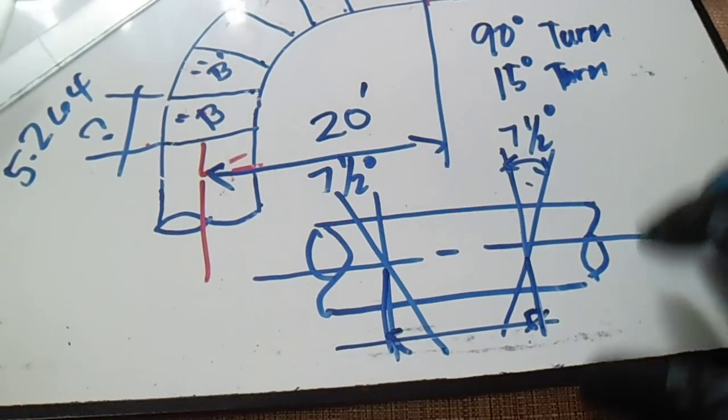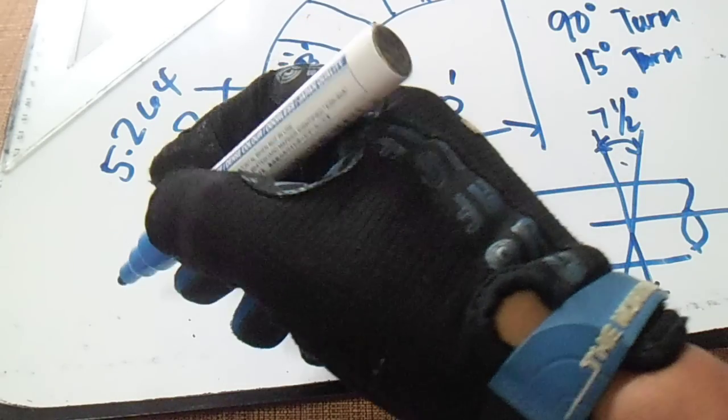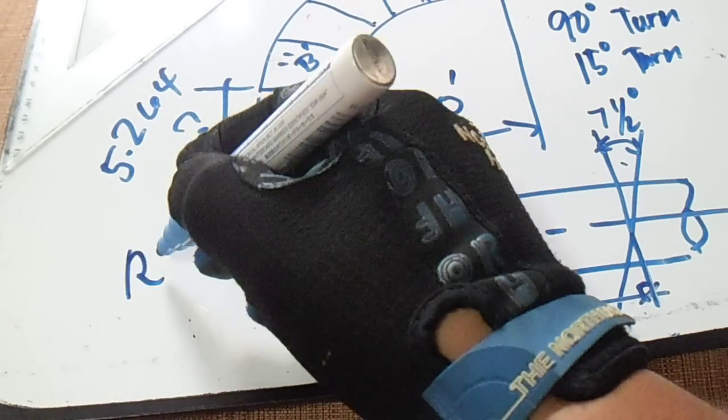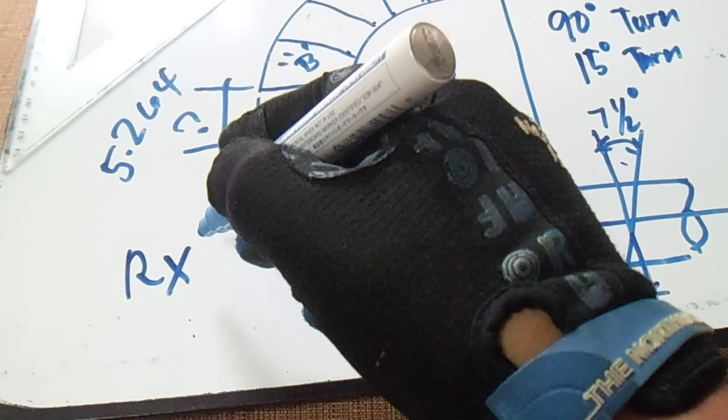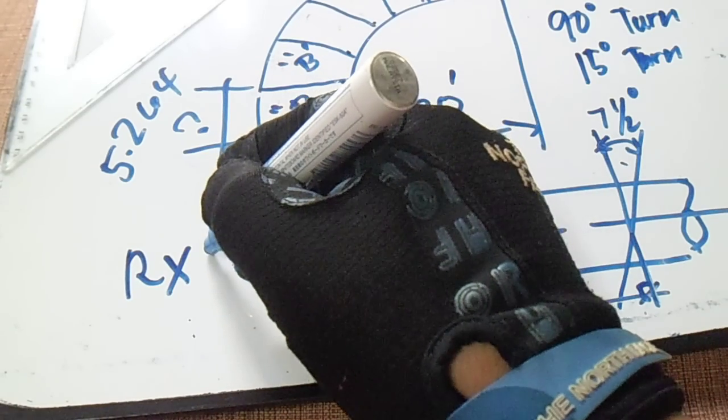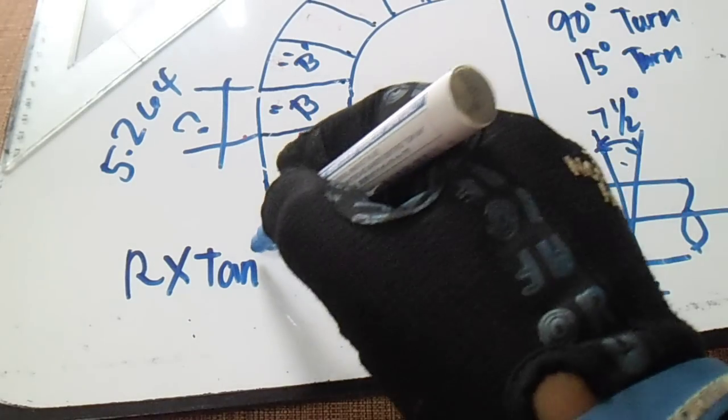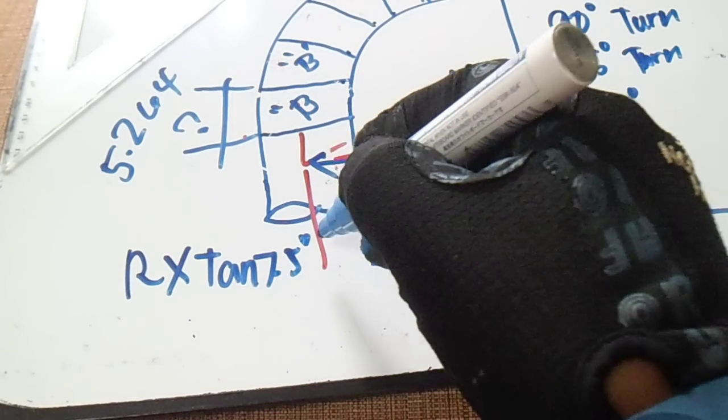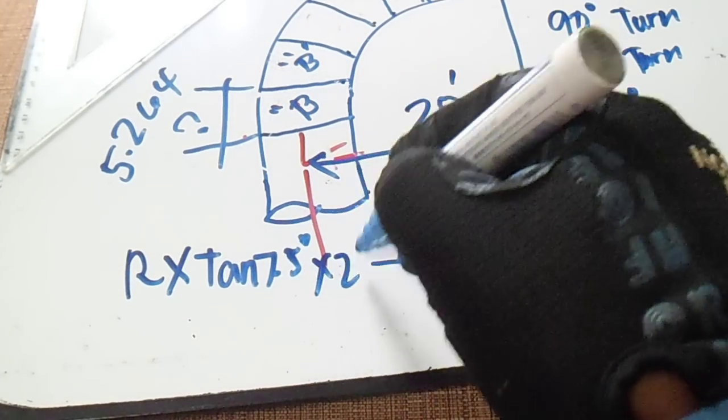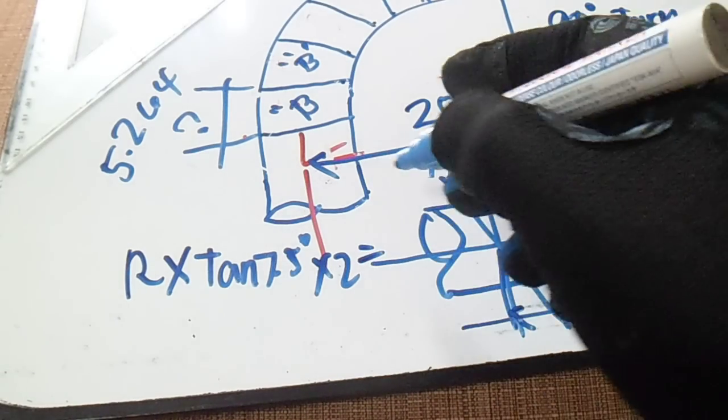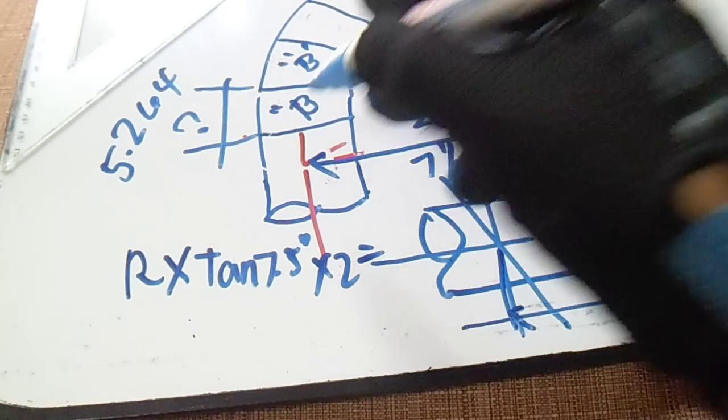I'll write down the formula to get this dimension here: radius multiplied by tan of 7.5 degrees, multiplied by 2, equals dimension B.